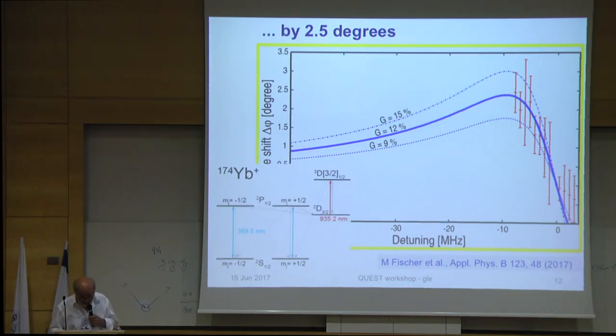The results that we have so far are like this. We have something like two and a half degrees phase shift imposed by the single ion onto the coherent light field. This is the level scheme of the ytterbium singly ionized ion that we use. The coupling strengths we indicate by this capital G. In this case it was around about 10 to 12 percent. We know what to do to increase this further.